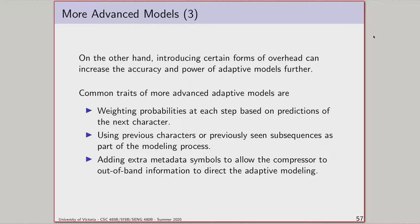If you determine that after Q the letter U is very likely, you feed that into your arithmetic coder by assigning U an extremely high probability. The better you are at predicting things, the smaller the encoding gets. And you can still be wrong — if the next character isn't U but A, you assigned A a low probability, so it's less efficient, but you can still encode it. You can play the odds, and based on the success of your guess, get better encodings without breaking your compressor.